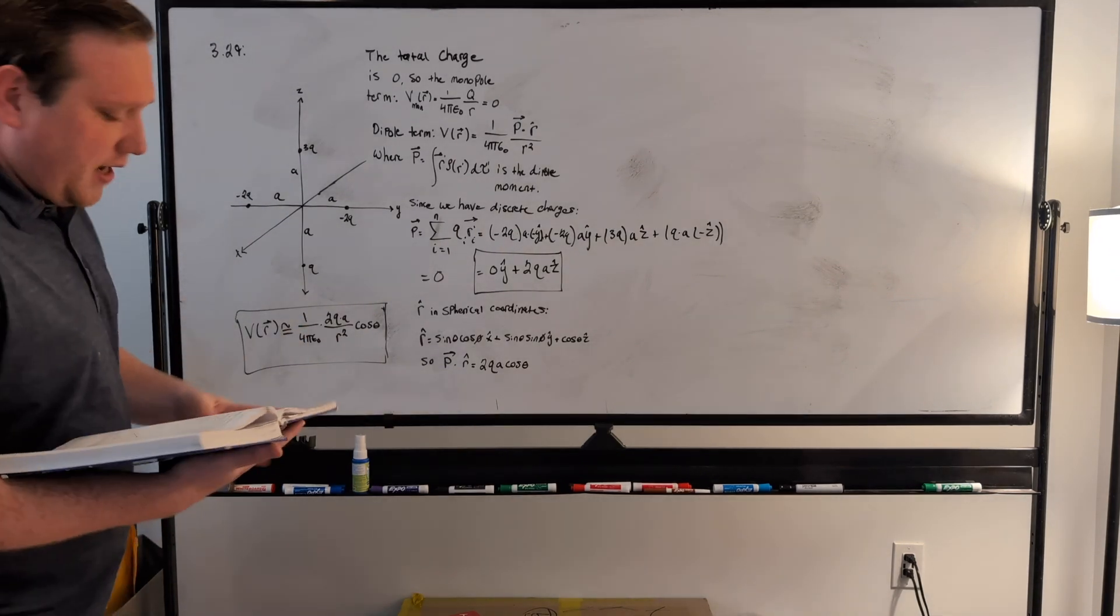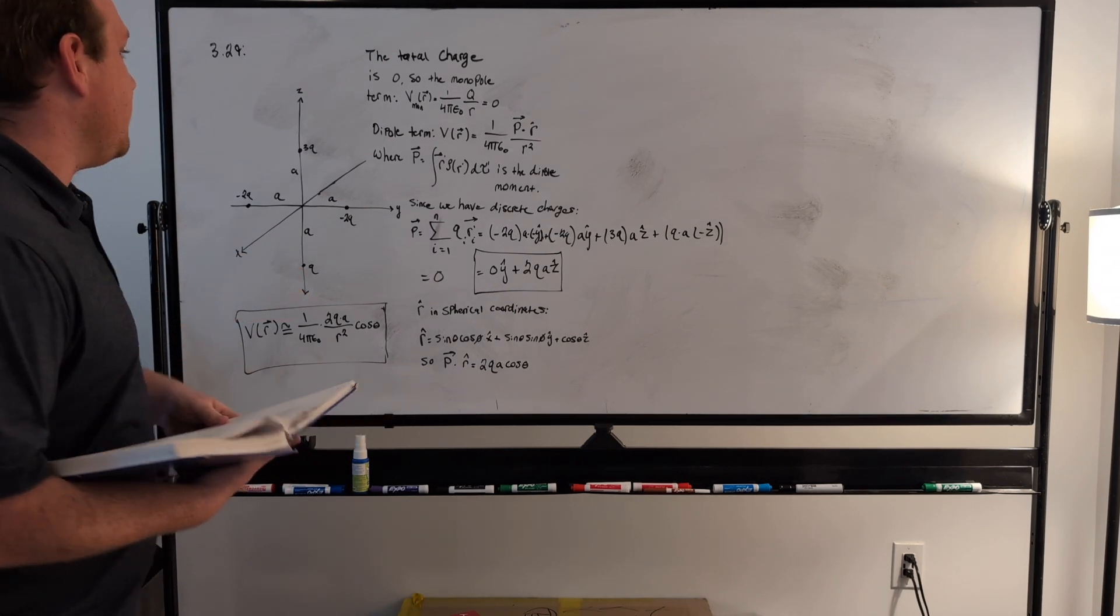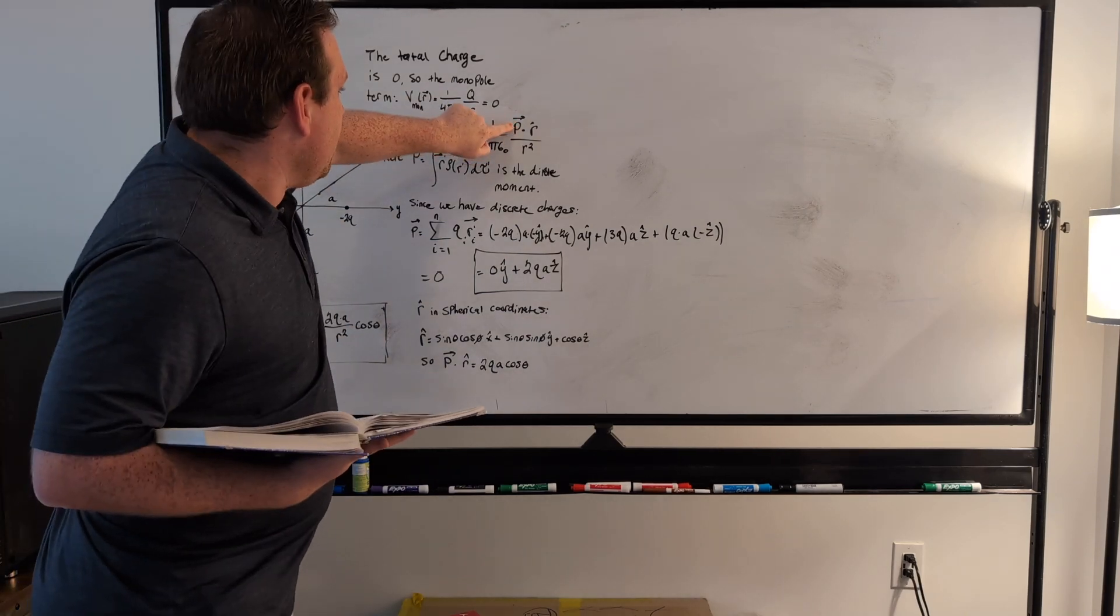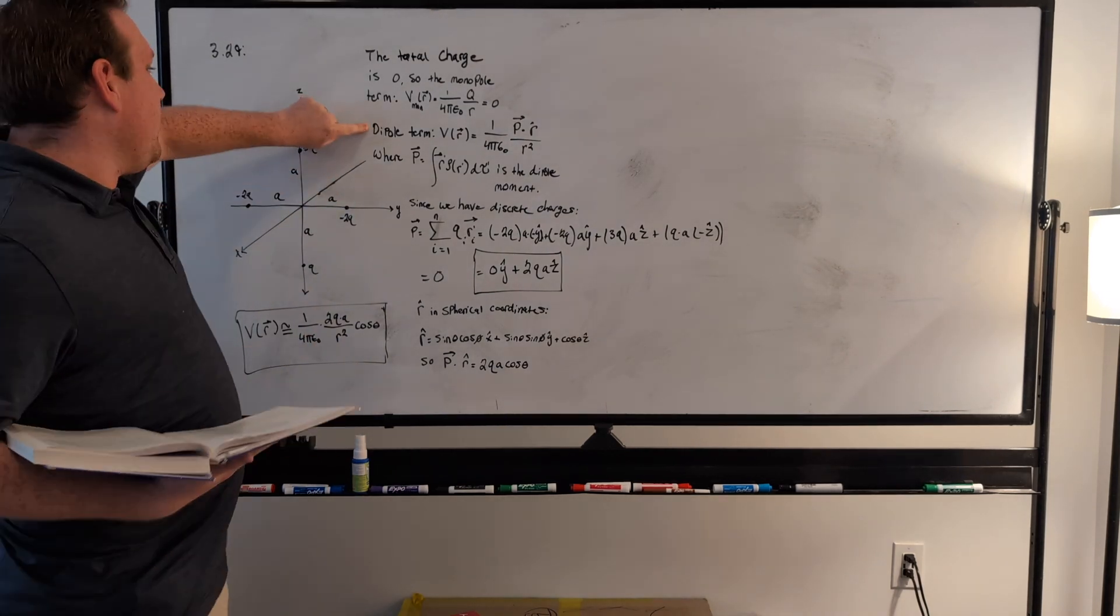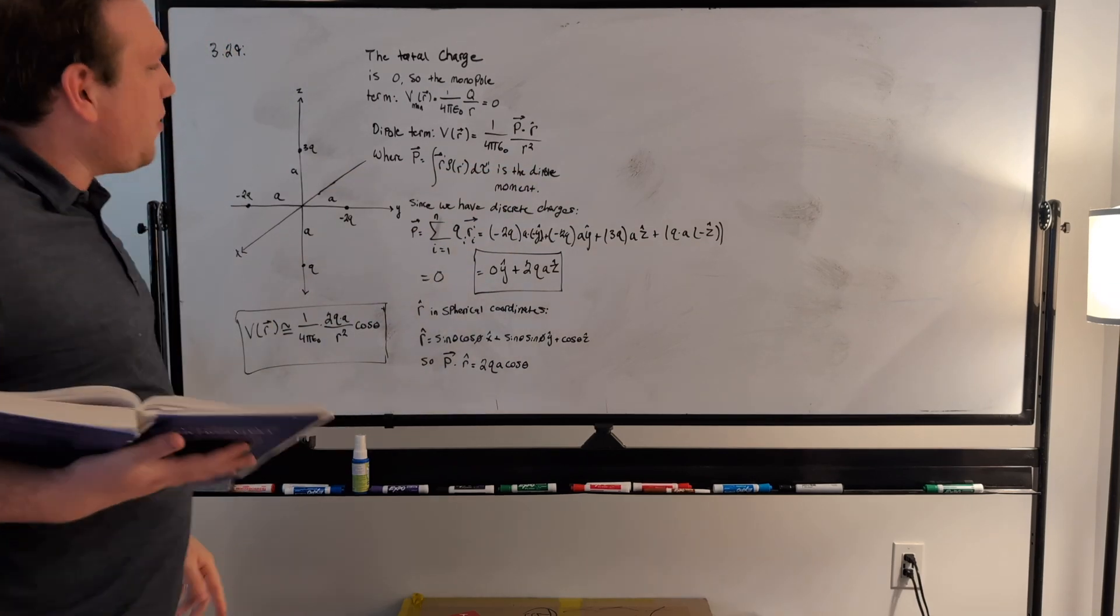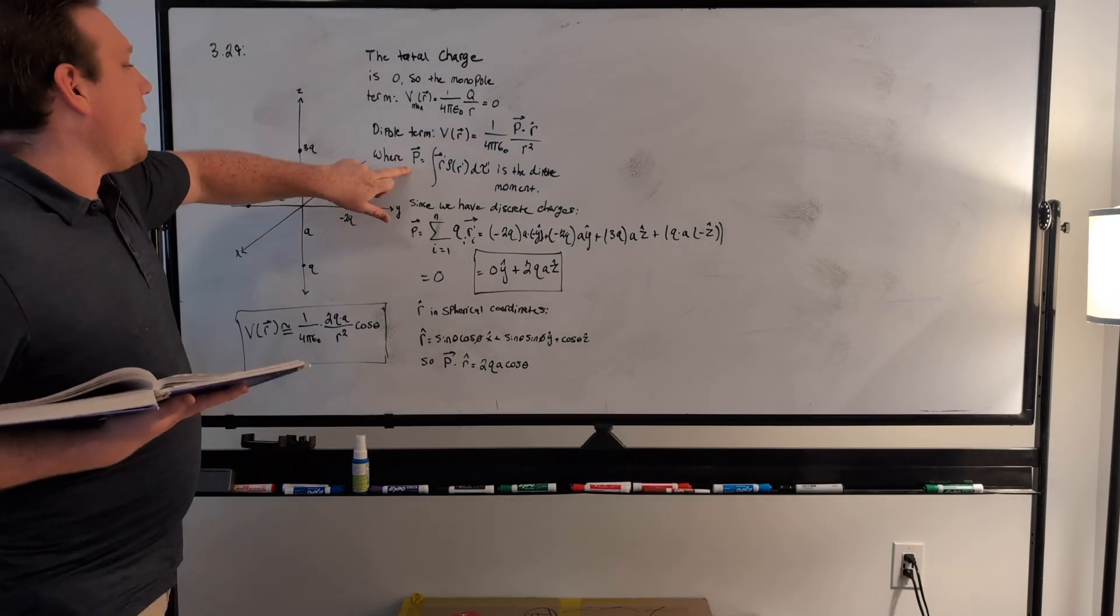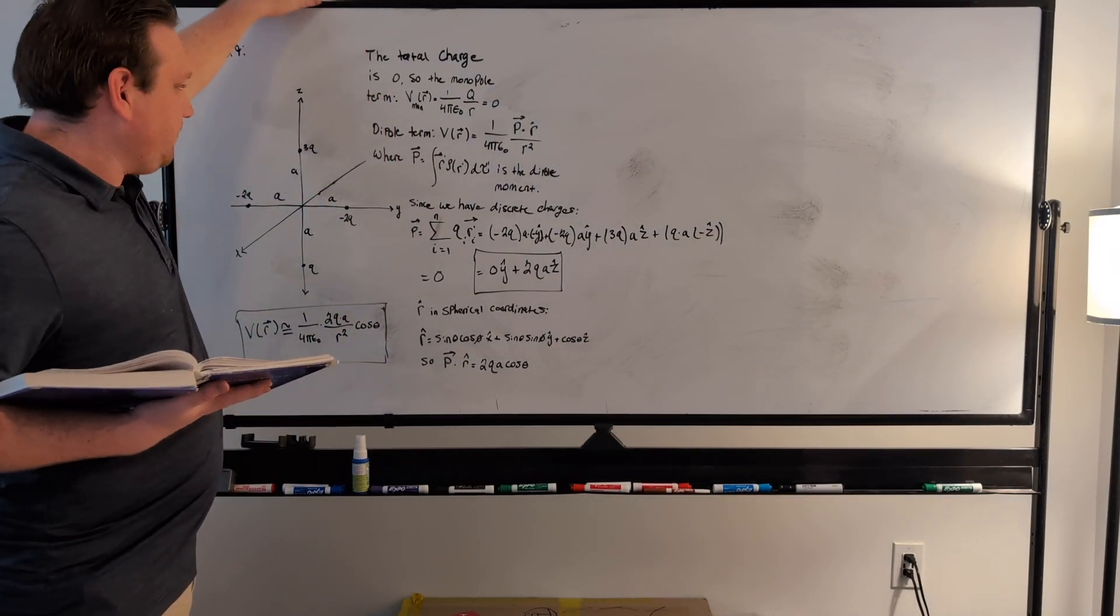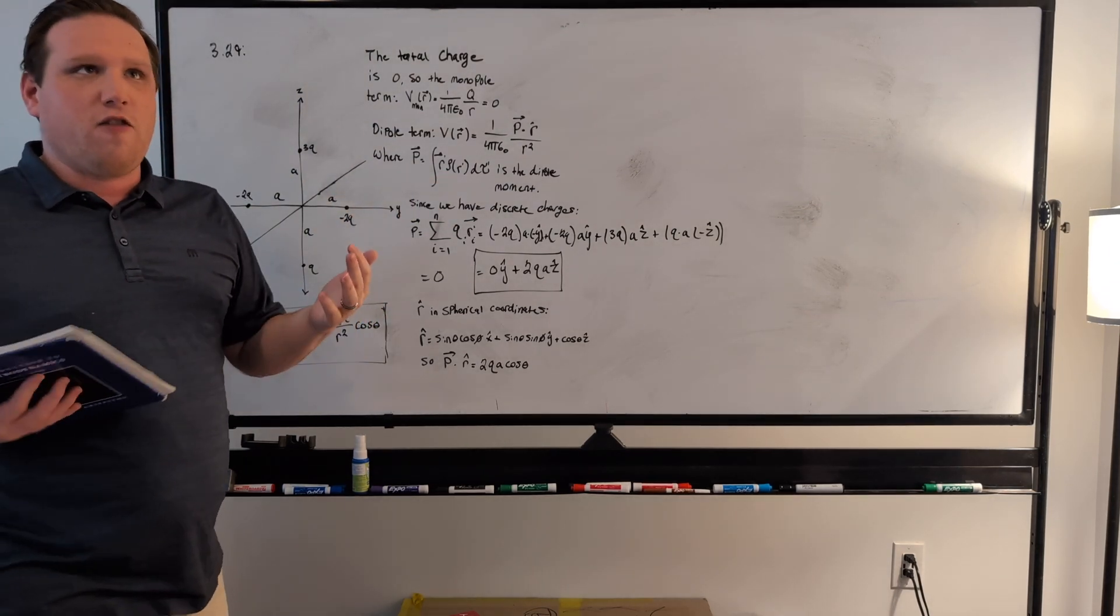But in this section, Griffiths goes through how we can express the dipole term in terms of this new definition called the dipole moment. So he shows that you can write the dipole term as a dot product between the dipole moment and the r-hat vector over r-squared, where the definition of the dipole moment is just this part of the inside of the integral from the monopole term.